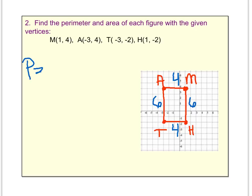We can now go ahead and find perimeter because perimeter is just adding up all the sides. And so 4 plus 6 plus 4 plus 6, we get a perimeter of 20.